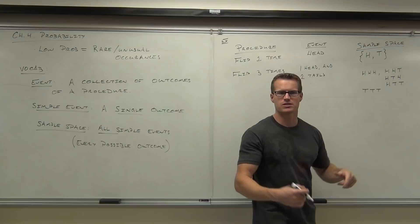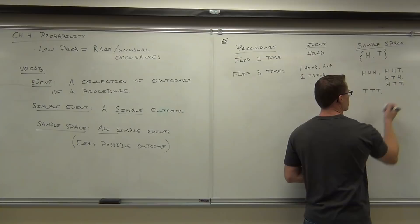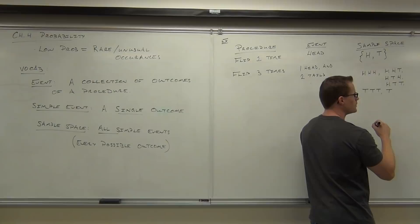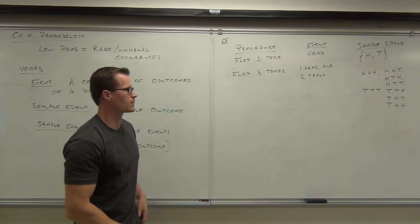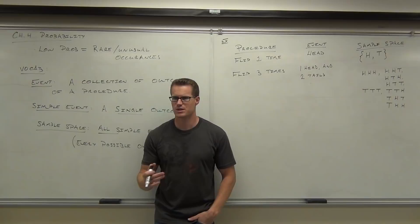Let's do the tail-first ones: tail-tail-tail, tail-tail-head, tail-head-head, and tail-head-tail. We already have tail-tail-tail. Did I miss any possible outcomes? Are you seeing how we're getting these? We're just imagining flipping a coin three times. It's easiest to think of all the ways you can have a head first, then all the ways starting with a tail.